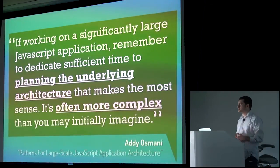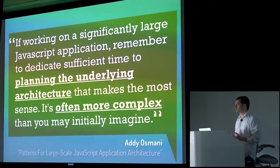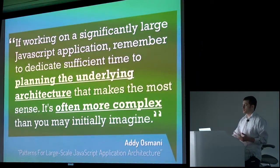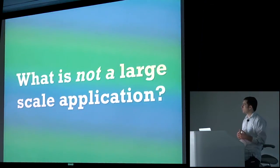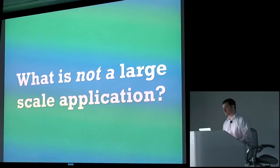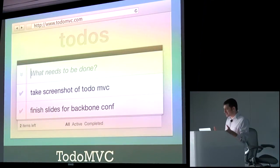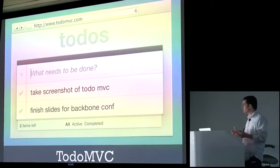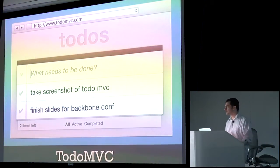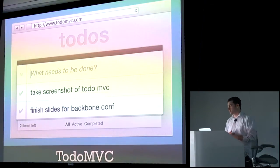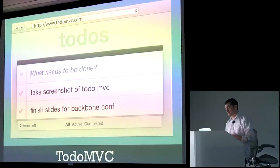I certainly agree with all of that, but it's still pretty abstract. So I'd like to define some characteristics of Backbone applications that will point us in the right direction. Let me start by saying: what is NOT a large-scale application? I really wanted to use TodoMVC here as the poster child, because it's unfortunately most likely the first Backbone app that most new developers use to understand Backbone or compare it against other MVC frameworks. If you're looking at TodoMVC trying to foresee what it's like building a large-scale Backbone app, this couldn't possibly point you in a worse direction.